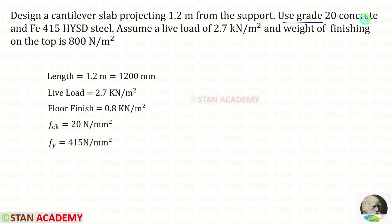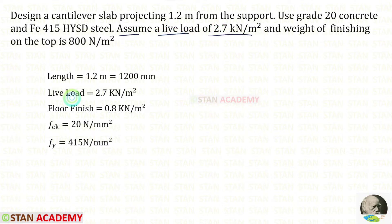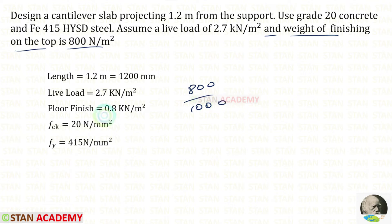Use grade 20 concrete and Fe 415 high yield strength deformed steel. FCK is 20 and FY is 415. Assume a live load of 2.7 kilonewton per meter square and weight of finishing on the top is 800 newton per meter square. We can convert that into kilonewton per meter square — 800 by 1000 — it will be 0.8.